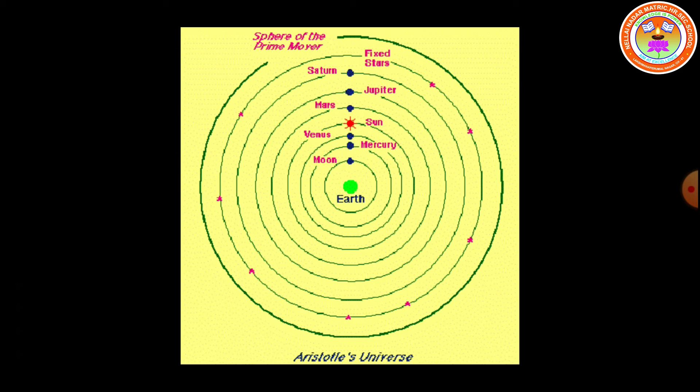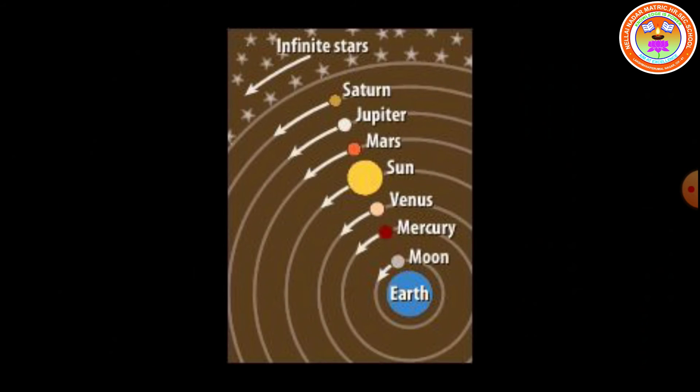Thus, every day the moon appears to move from east to west in one day, whereas it appears to go in a circle from west to east in the background of stars in about 27 days.